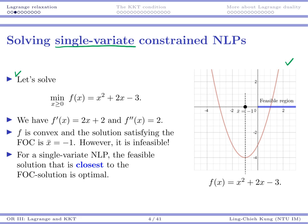So suppose we solve this problem. We have first order derivative, second order derivative. We can see that f is convex, right? Because the second order derivative is positive. And then the solution would be something satisfying the first order condition, which means 2x plus 2 must be 0, so x must be negative 1. But this solution, x-bar equals minus 1, this guy is infeasible.